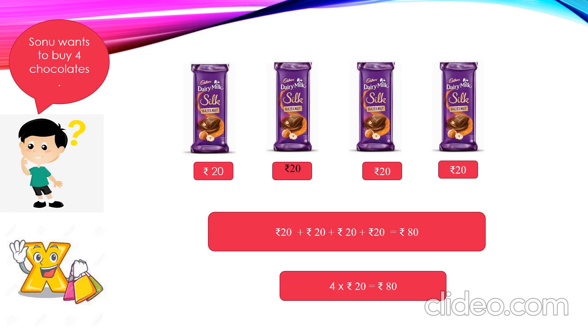Sonu wants to buy 4 chocolates. Here the cost of each chocolate is 20 rupees. Can you guess how much money Sonu needs to buy 4 chocolates? Shall we try? 1 chocolate is 20 rupees, plus 2nd went 20, 3rd chocolate 20 and 4th chocolate 20 rupees. So let's add. We'll get the total 80 rupees.